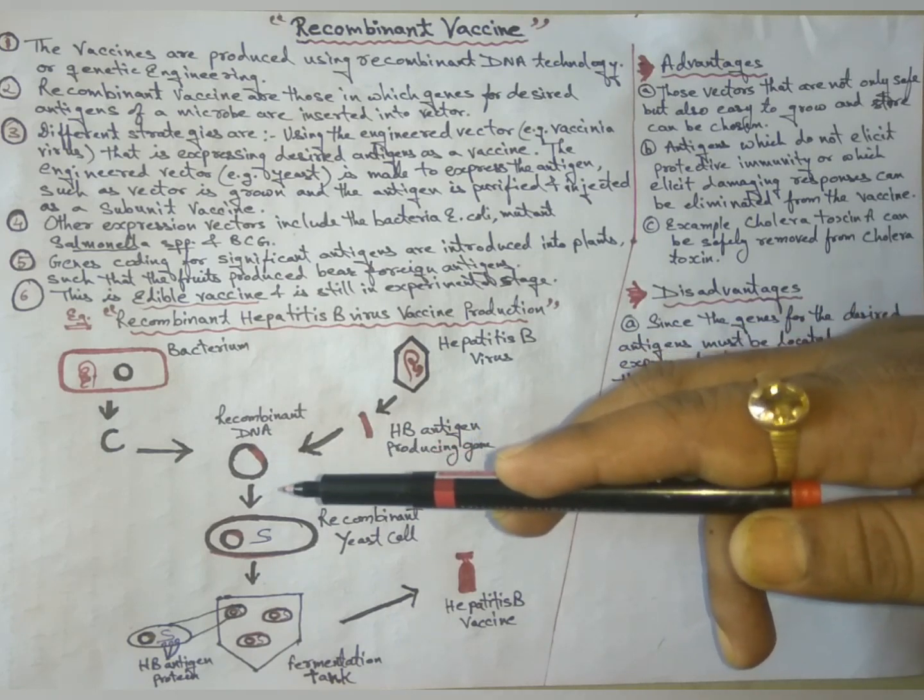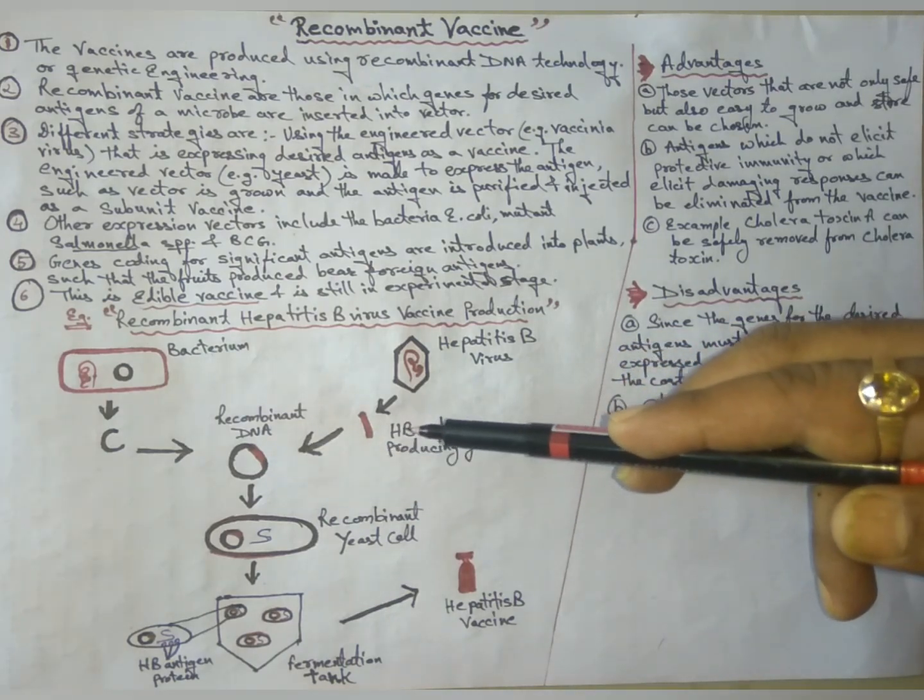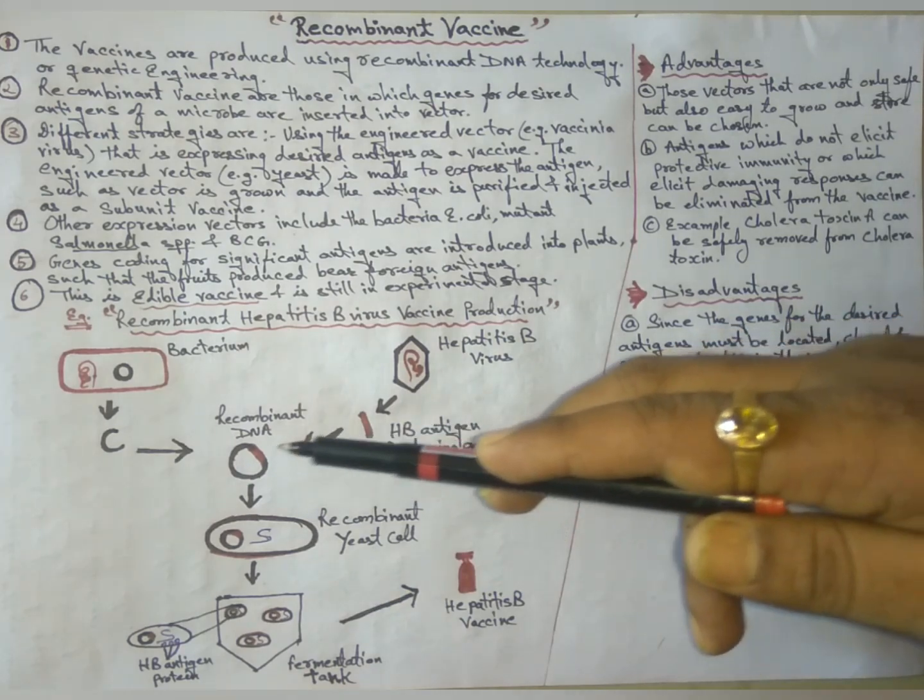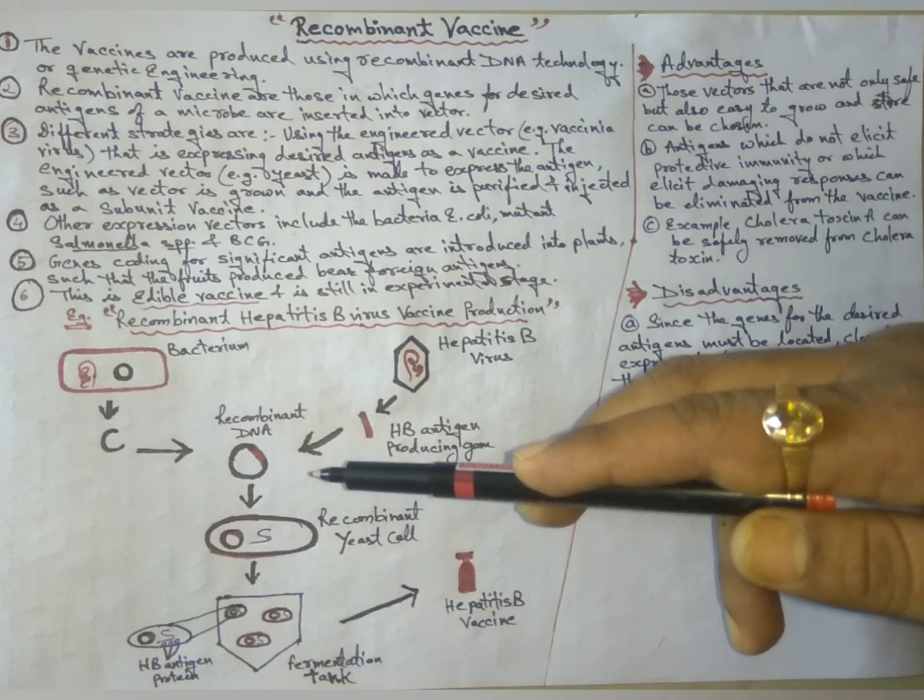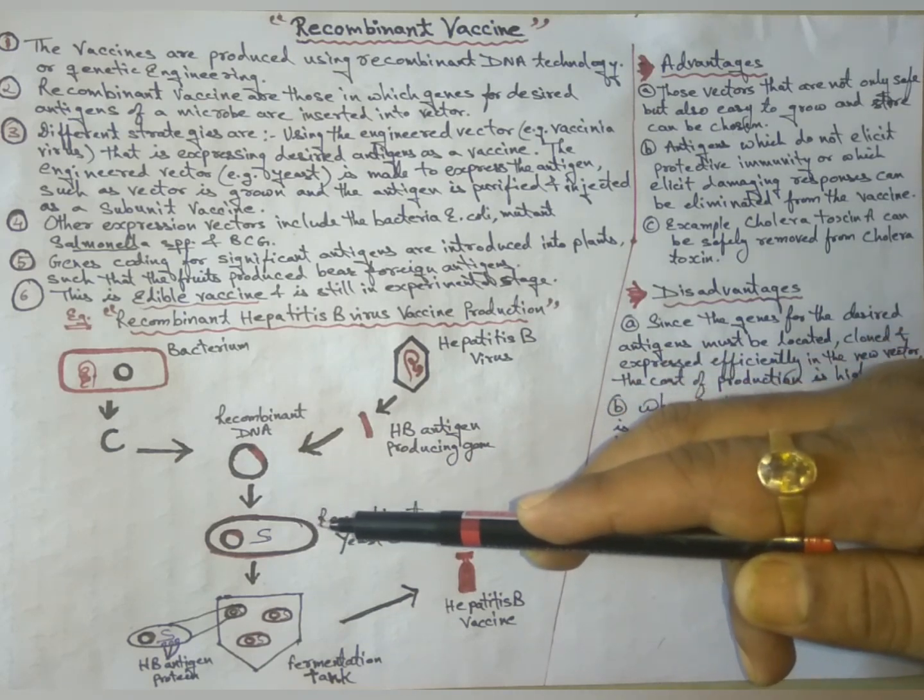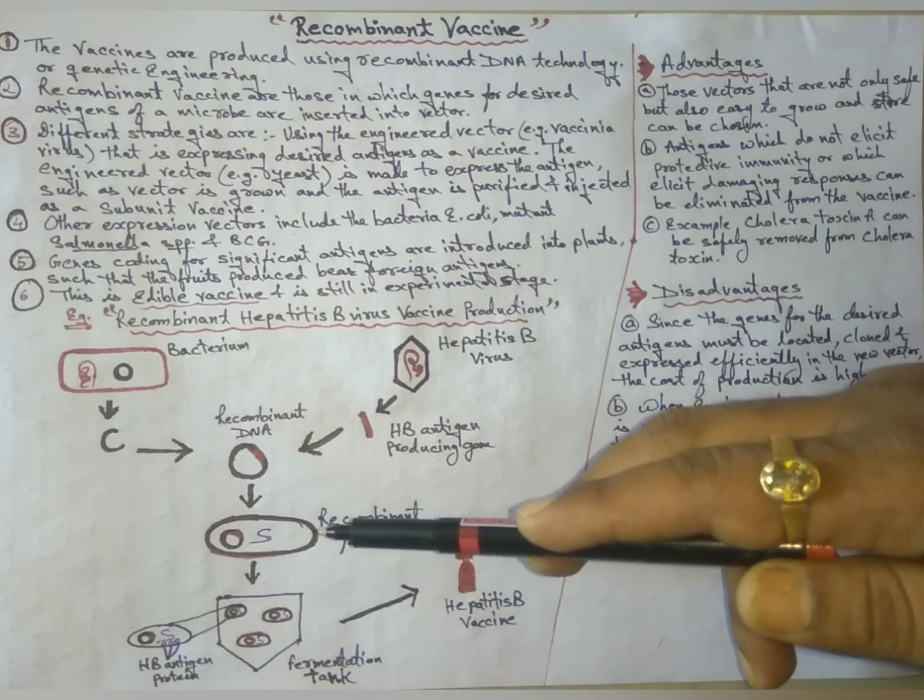The isolated HBV antigen-producing gene is inserted into the plasmid vector to form recombinant DNA. The recombinant DNA is introduced into a yeast cell to form a recombinant yeast cell.